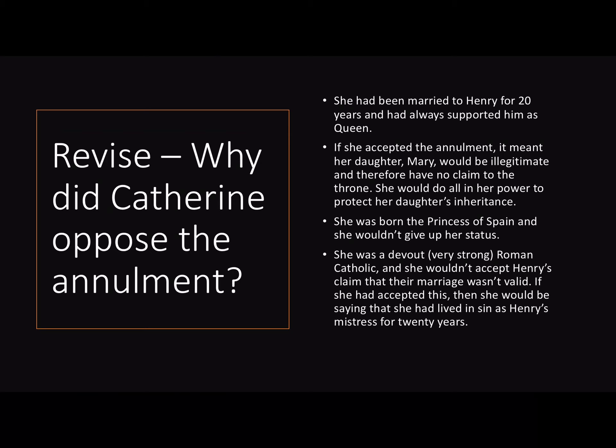So, why did Catherine oppose the annulment? She had been married to Henry for 20 years and had always supported him as Queen. If she accepted the annulment, it meant that her daughter Mary would be illegitimate, and therefore she would have no claim to the throne. She knew that she would do all in her power to protect her daughter's inheritance. Catherine was also born the Princess of Spain, and she wouldn't give up her status. Catherine was a devout Roman Catholic, and she would not accept Henry's claim that their marriage wasn't valid. If she accepted this, then she would be saying that she had lived in sin as Henry's mistress for 20 years.